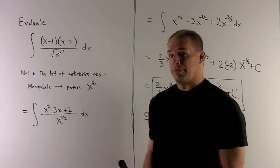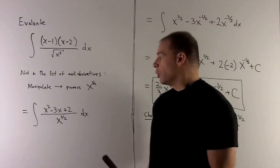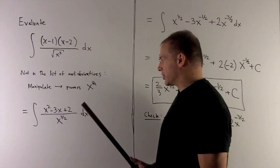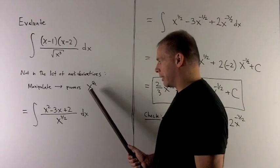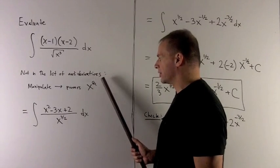So, trying to foreshadow what's going to happen, we want to try to get this thing as a sum of powers, x to the k, where k is some number.